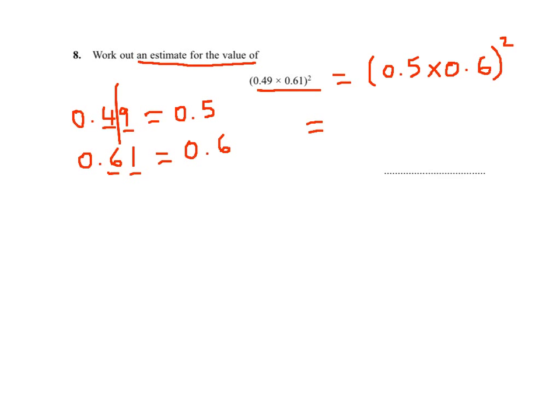0.5 times 0.6 is 0.3 power 2, because 5 times 6 is 30. Two decimals is 0.3 squared.